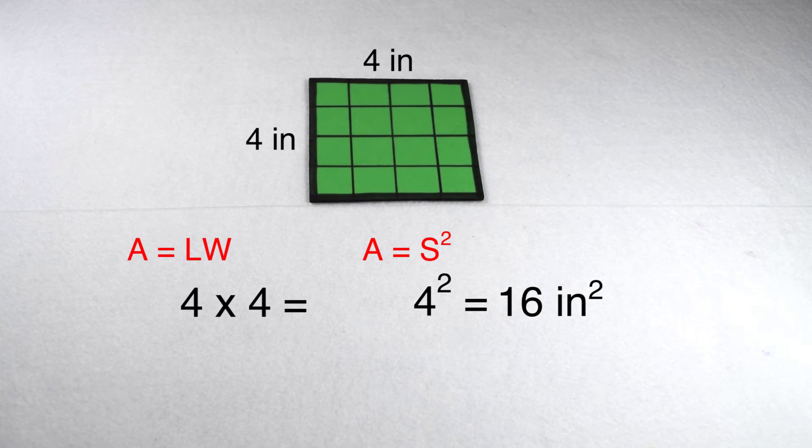Either equation is going to work, but the most specific one for a square would be area equals side squared.